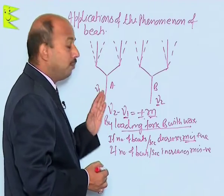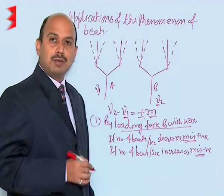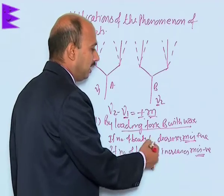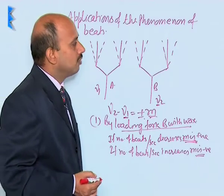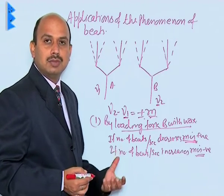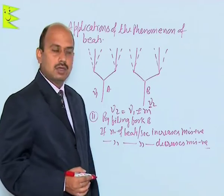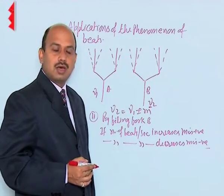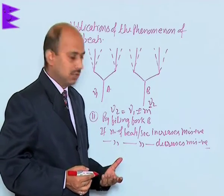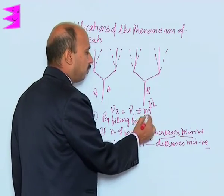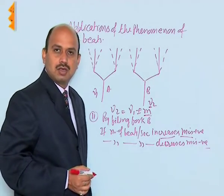Similarly, if we are loading fork A instead, the same logic applies in reverse. If the number of beats per second increases by loading A, then we take m as positive, and if the number of beats per second decreases on loading A, then we take m as negative. The second method is by filing fork B. Fork B is filed and then sounded together with fork A, and we count the number of beats per second. If the number of beats per second increases, we take m as positive; if it decreases, we take m as negative.